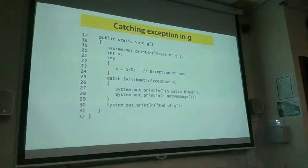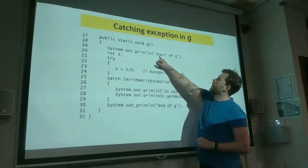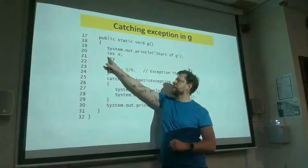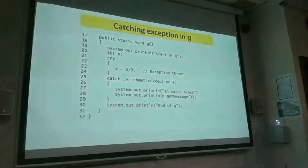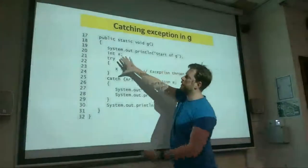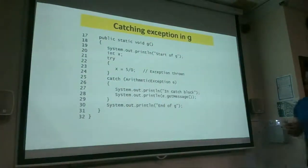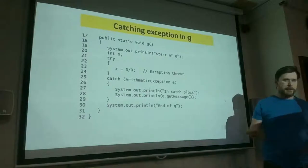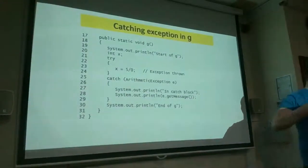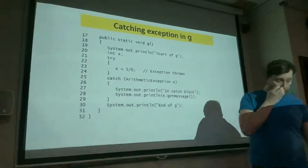The try-catch block is a way of putting a container around your code. Here's method g rewritten: we declare our integer, then open a try block with curly braces containing 'x = 5 / 0'. Whatever is inside the try block has the possibility of a runtime exception. Think of it like a temperamental robot — if there's an error, something throws it out, and before it gets too far, the catch block catches it.